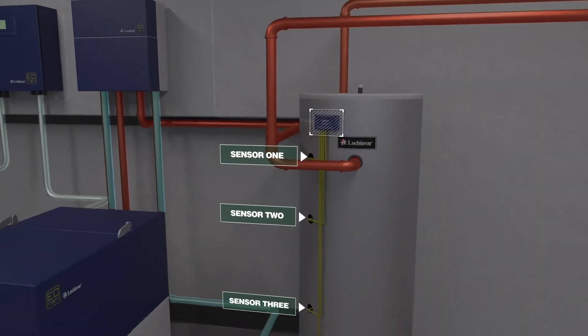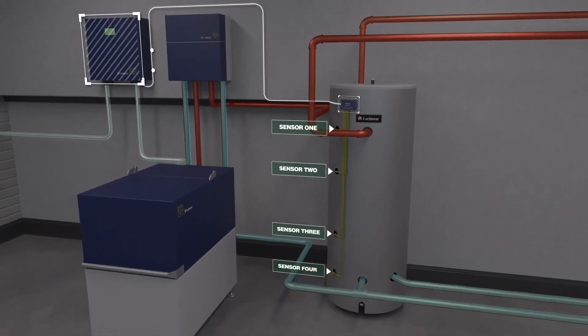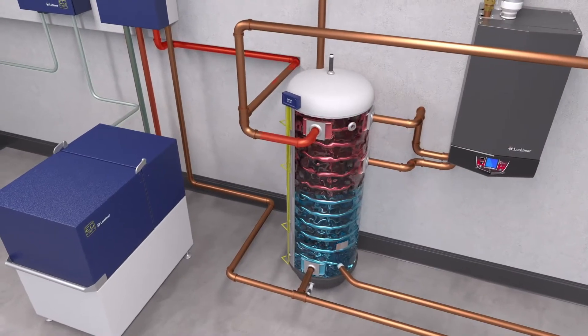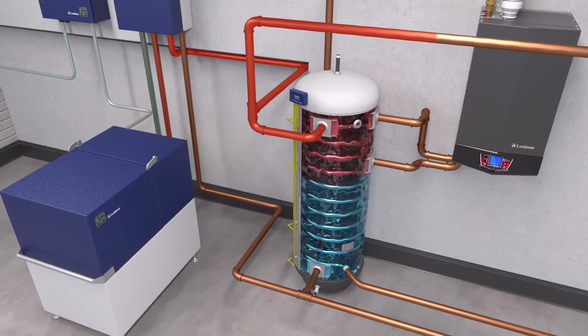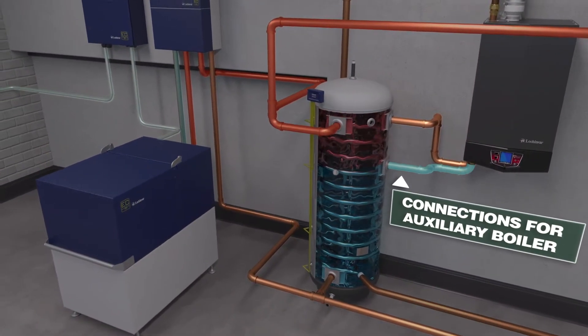Each sensor is wired to a storage control module which sends information to the IQ control panel. Hot water for the heating system is drawn near the top of the storage tank and from an auxiliary Lochinvar boiler if the building's heat demand exceeds the output of the cogen unit.